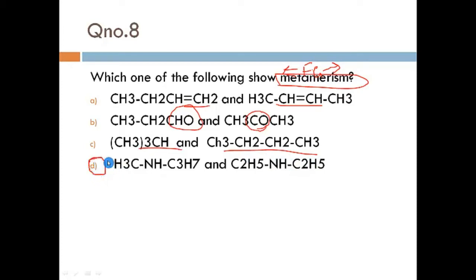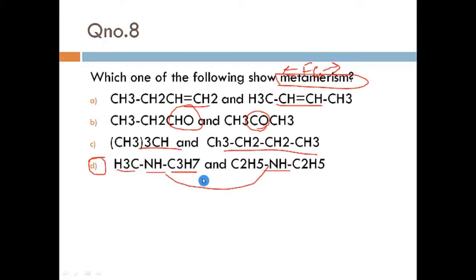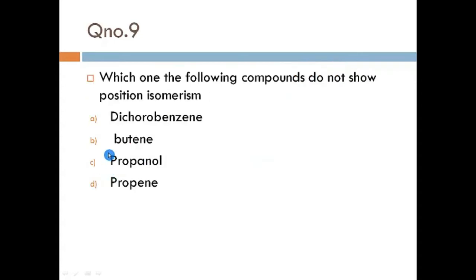The answer is D. Why D? Because there is a functional group in the middle, and on both sides there is an unequal distribution of carbons — these two are metamers of each other. So that is our answer.